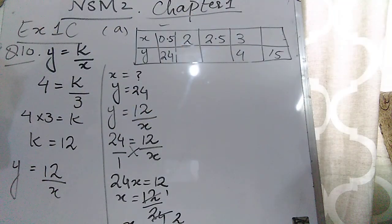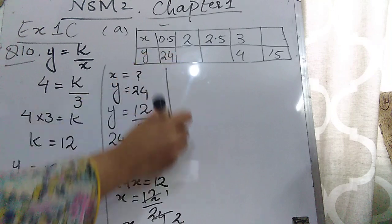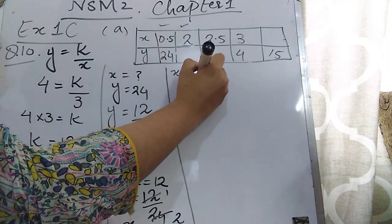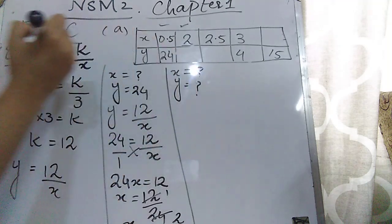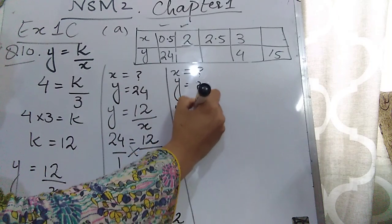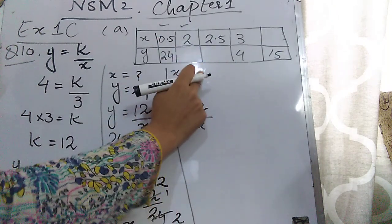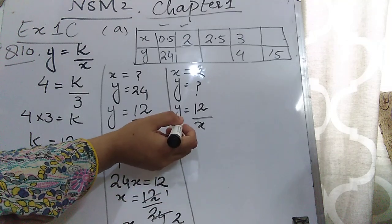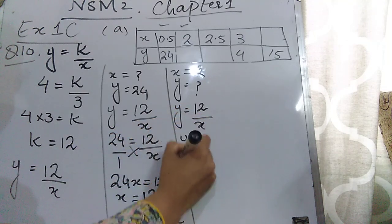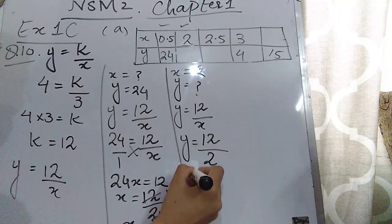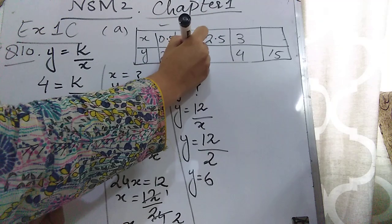In the next column, the value of x is given as 2 and you have to find the value of y. Use the main equation y = 12/x. Put the value of x = 2: y = 12/2 = 6. So the value of y is 6.